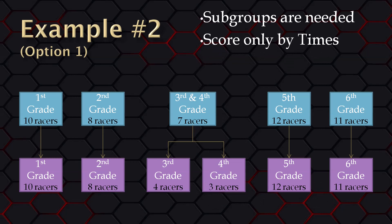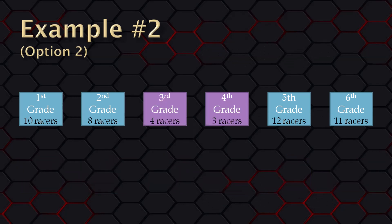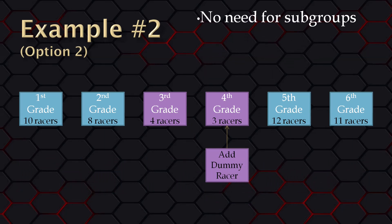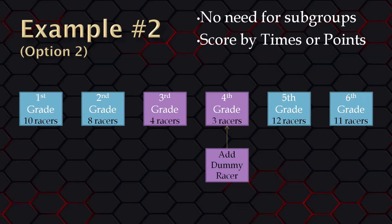If you are scoring by points, the other option would be to add one or more dummy racers so you can get a schedule built. With this option, there is no need to use subgroups, and you also have the option of scoring by times or by points.